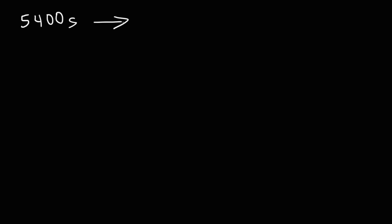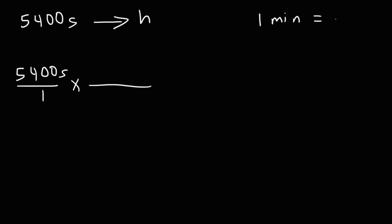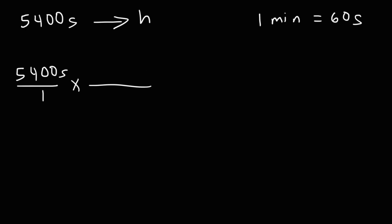Let's say we have 5,400 seconds and want to convert that to hours. We start with what we're given and convert seconds to minutes. Keep in mind, 1 minute is equal to 60 seconds. Since we have seconds on top in the first fraction, we put 60 seconds on the bottom of the second fraction, and 1 minute on top, so the unit seconds cancel.